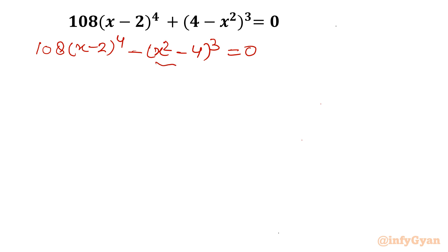Now here we will write x plus 2 times x minus 2. x² minus 4 can be written as x² minus 2². Then I can write (x+2)(x-2). Let me write this: 108(x-2)⁴ as it is unchanged minus (x+2)(x-2)³ equals 0.